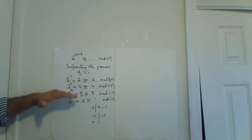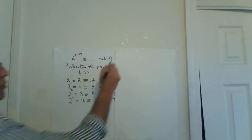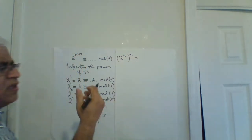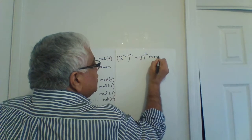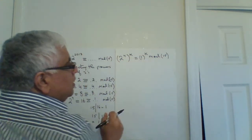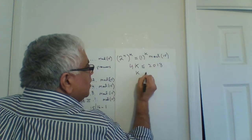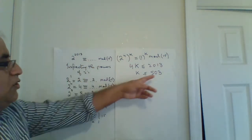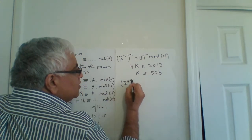We have 2 to the power 4 ≡ 1 mod 15. We need to raise that to some integer power k that gives us as close to 2013 as possible. This is done through a property. We find k by dividing 2013 by 4, which gives 503.25, so we take the integer part: k = 503.